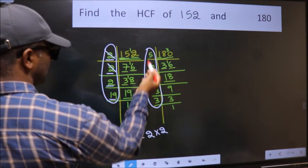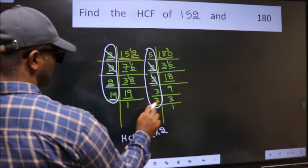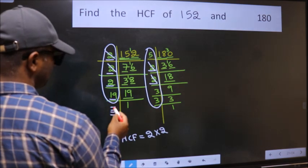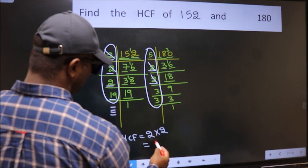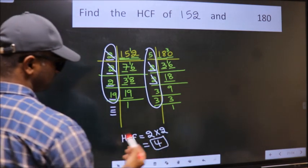Next number 19. Do we have 19 here? No. No more numbers have been left out. So our HCF is 2 times 2, which is 4.